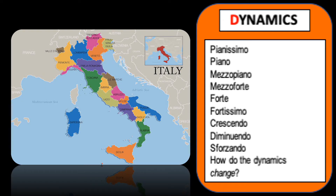You will have noticed that all of the words for dynamics are Italian. Why do we have so many Italian words in music? It's because the Renaissance period, which was between roughly 1450 and 1600, was a very important time for the development of new musical ideas. This was when composers were first writing markings for dynamics into their music. Nearly all of the important composers at this time were Italian, so it just became conventional to use their terms in all music, no matter where you're from.